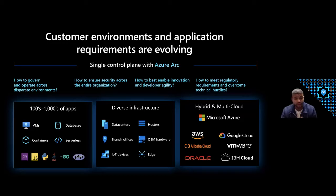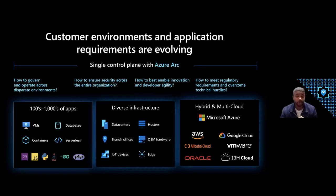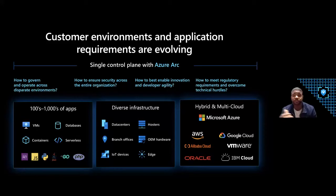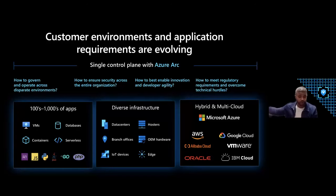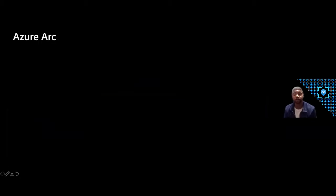There are four key questions every enterprise is concerned about: how do we govern and operate across disparate environments, how do we ensure security across the entire organization, how do we best enable innovation with the agility of engineering and development, and how do we meet regulatory requirements and overcome technical hurdles? Azure Arc provides that single control plane, positioning itself as the bridge between hybrid and multi-cloud diverse infrastructure and applications, bringing that data back into Azure and into Microsoft Sentinel.